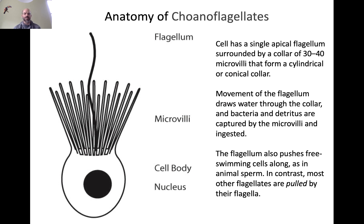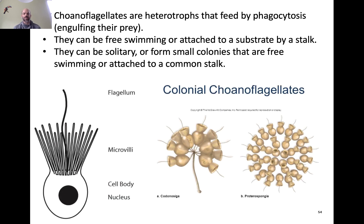Here is a diagram of a choanoflagellate cell — a single cell with a single flagellum, which is the thing that binds all of the opisthoconts together. The flagellum is how the choanoflagellate cell moves around in its environment. Choanoflagellates are colonial organisms — they are single-celled but can come together into aggregates and colonies. They are heterotrophs that feed by phagocytosis. They are mostly free-swimming, but they can also attach to a substrate by a stalk, making them sessile as well as free-moving.